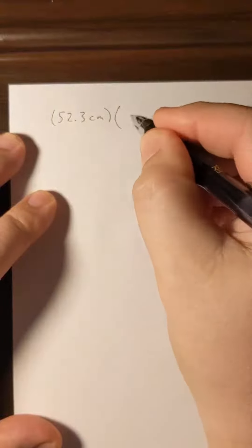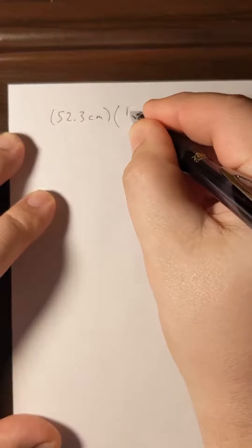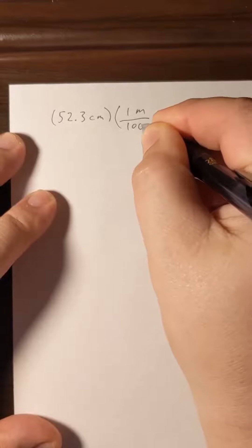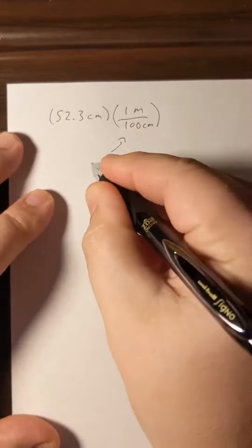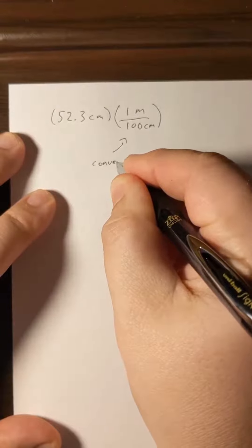We're going to multiply this value by the conversion factor, which will be 1 meter is 100 centimeters. And so this is our conversion factor.